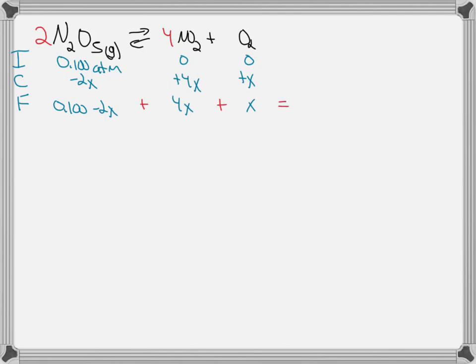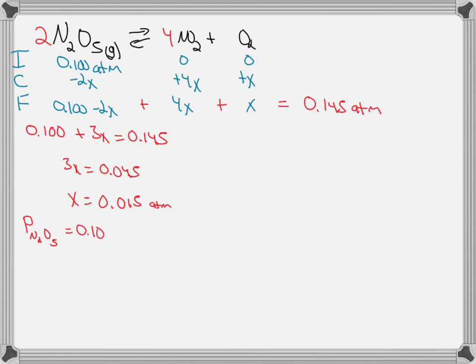They tell us that the sum after a particular amount of time is 0.145 ATM. This then allows us to solve for x where the total pressure of 0.145 ATM is equal to 0.1 plus 3x. So x then becomes equal to 0.015 ATM.